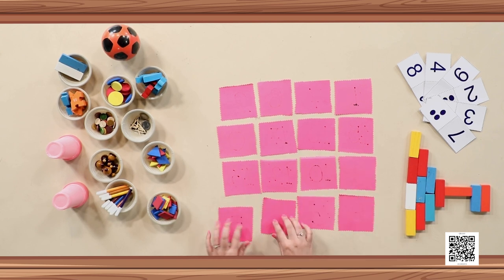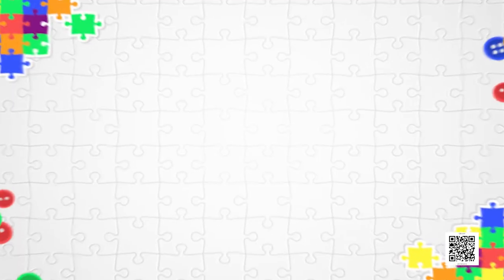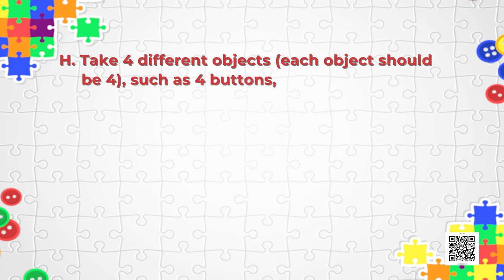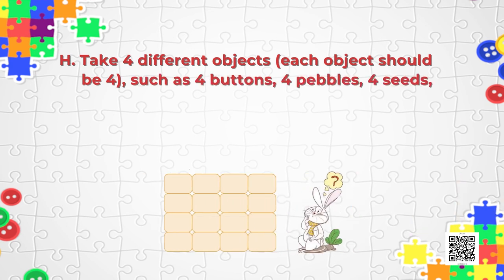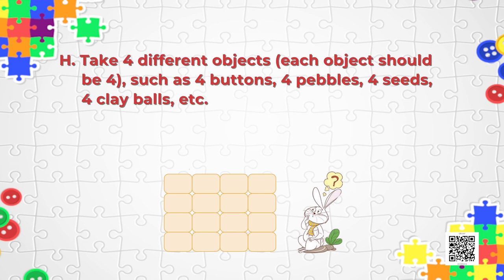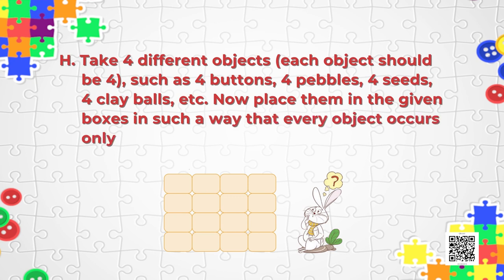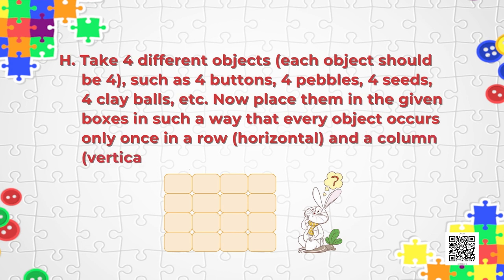So I'm almost done. The question is: take four different objects, each object should be four in number — such as four buttons, four pebbles, four seeds, four clay balls, etc. Now place them in the given boxes in such a way that every object occurs only once in a row (horizontal) and a column (vertical).